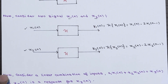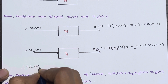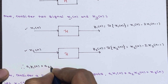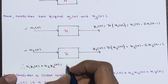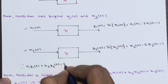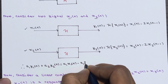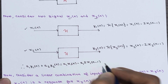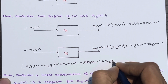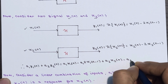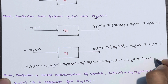Now you have to calculate a1·y1(n) + a2·y2(n). So a1·y1(n) = a1·x1(n-2) · x1(n-1), plus a2·y2(n) = a2·x2(n-2) · x2(n-1). Remember this as Equation 1.